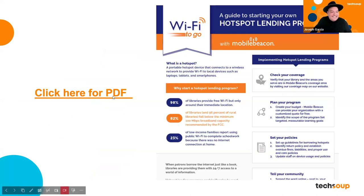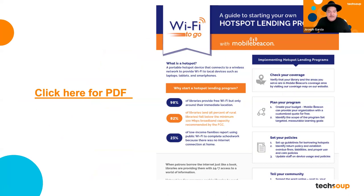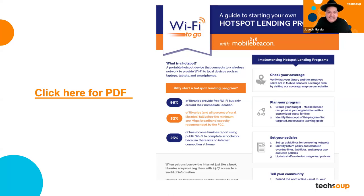Now we're going to talk about hotspot lending and community services. Mobile Beacon has created a resource guide with helpful information around creating an internet lending program. It takes you from start to finish — things to keep in mind when setting up an internet program. The link to this PDF is embedded in the slide deck you'll have access to after the presentation. It's a lot of really good information for those initiating this type of program for the first time.